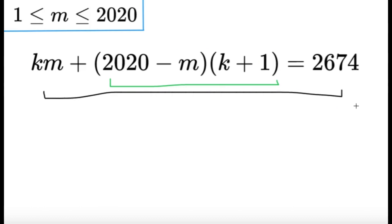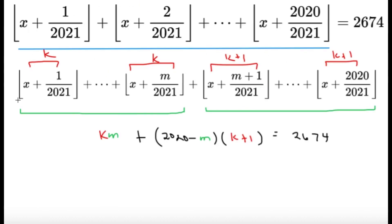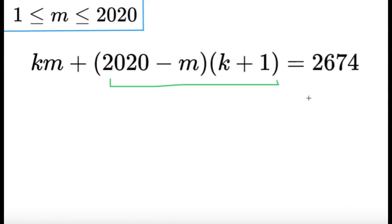We know that K and M must be integers because K is an integer, it's the floor function of these values, and K plus one is the floor of these values. So we just have to solve for integer values of K and M. Let's try to expand this one. So just 2020K plus 2020 minus mK minus m. And then mK is just km anyway, so there we go. So km and then minus km here canceled out. So I'll have like 2020K minus m. That's going to be equal to, well, this 2020 I can subtract it from 2674 and I'll get 654 from there. So I have 2020K minus m is equal to 654.